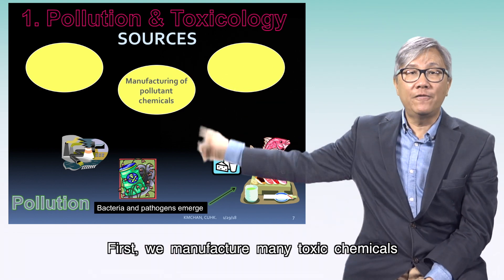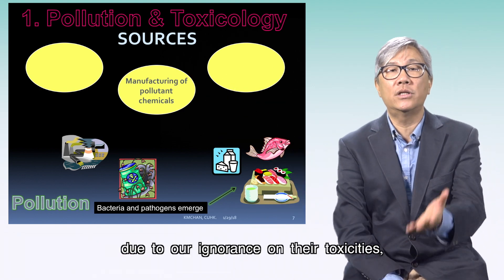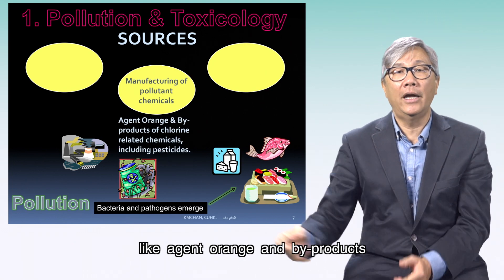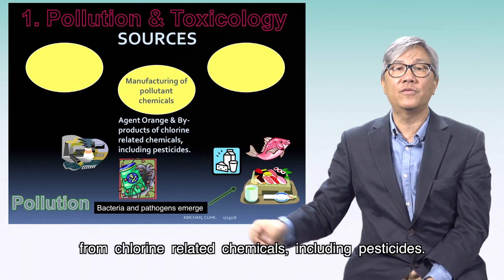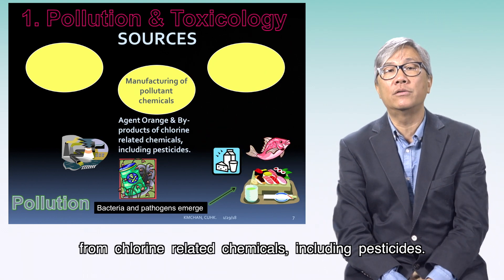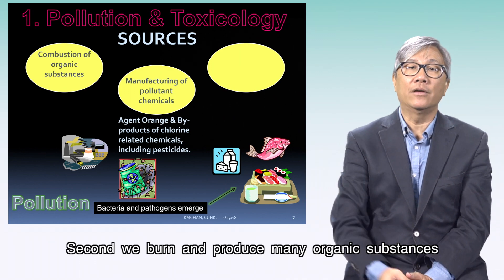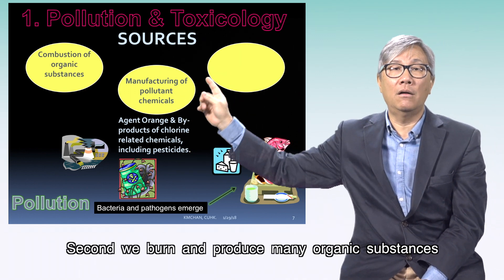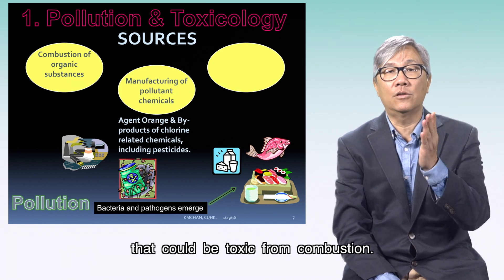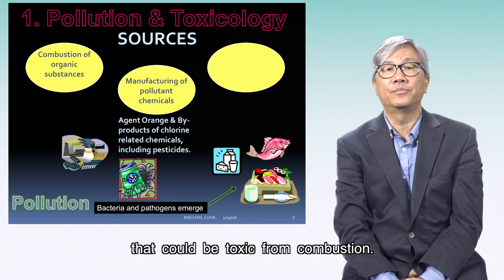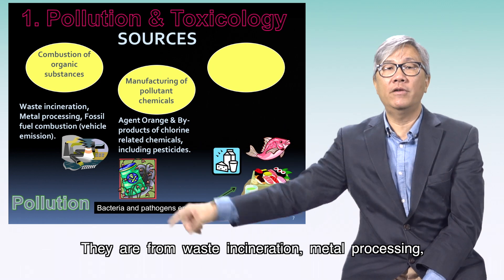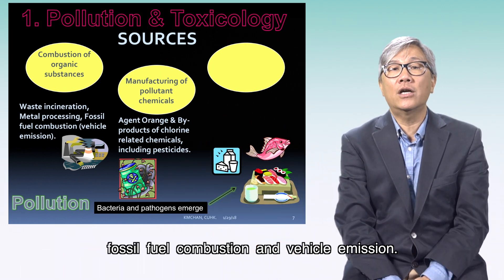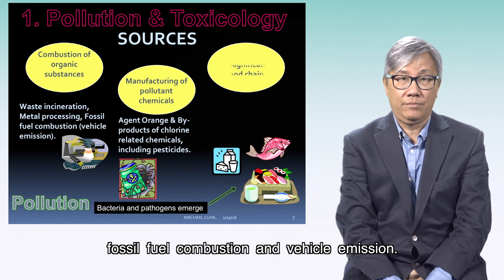It is important to understand the sources of chemicals threatening us daily. First, we manufacture many toxic chemicals due to our ignorance of their toxicities, like Agent Orange and by-products from chlorine-related chemicals including pesticides. Second, we burn and produce many organic substances that could be toxic from combustion — from waste incineration, metal processing, fossil fuel combustion, and vehicle emissions.